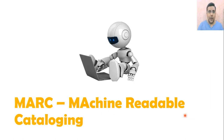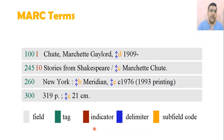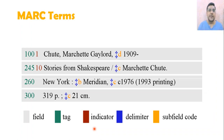MARC is machine readable cataloging format. It's an encoding schema — it's actually a metadata scheme. Metadata schemes encode information for the computer to make it readable. Whatever information we write between tags, indicators, and delimiters will be transmitted to the computer for interpretation.